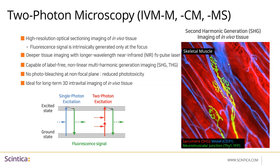A great feature of two-photon is that with a Chameleon laser, it gives you the ability for label-free imaging via second harmonic generation. Second harmonic generation is usually used to look at fibrous tissue — such as bone and muscle — as it shows fibers very well. In this example, we have imaged muscle; you will see the sarcomere visualized by second harmonic generation, vessels in CD31 blue, and the neuromuscular junction in yellow.